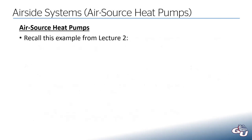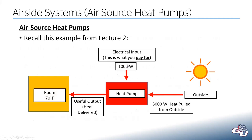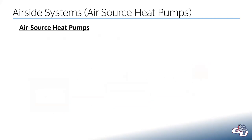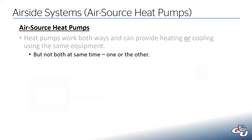If you think back to lecture two, I had a basic diagram where if we're going to pull 3,000 watts of heat from the outside, we have to run our heat pump at say 1,000 watts of power. If you have 1,000 watts and 3,000 watts going in, you're going to get 4,000 watts of useful heat out. Heat pumps can work both ways and provide heating or cooling using the same equipment and the same components — but that is an OR statement. It can't do both at the same time; it can either be in heating mode or cooling mode.